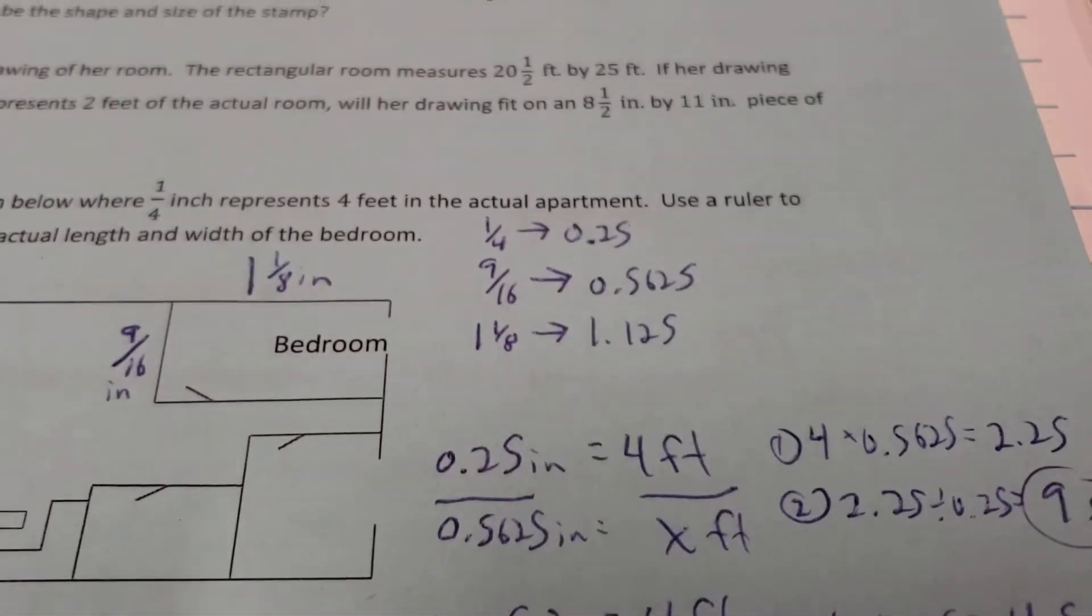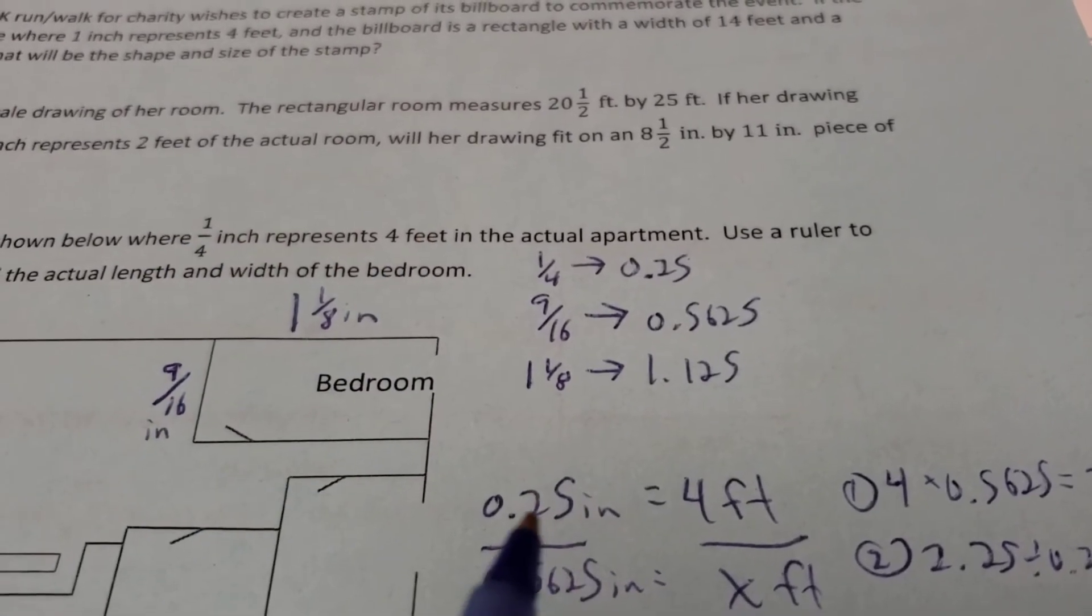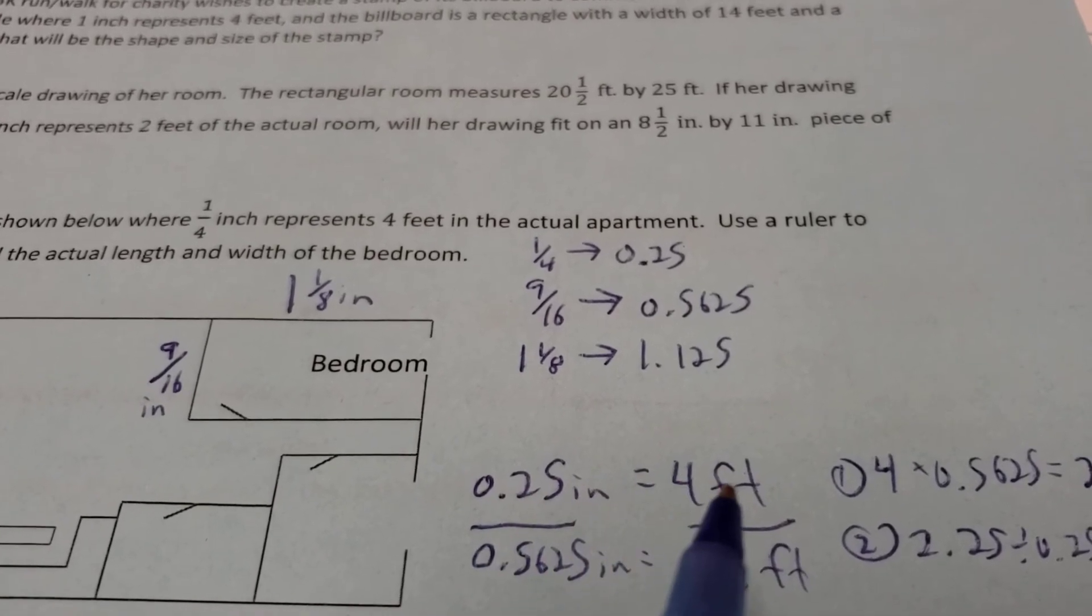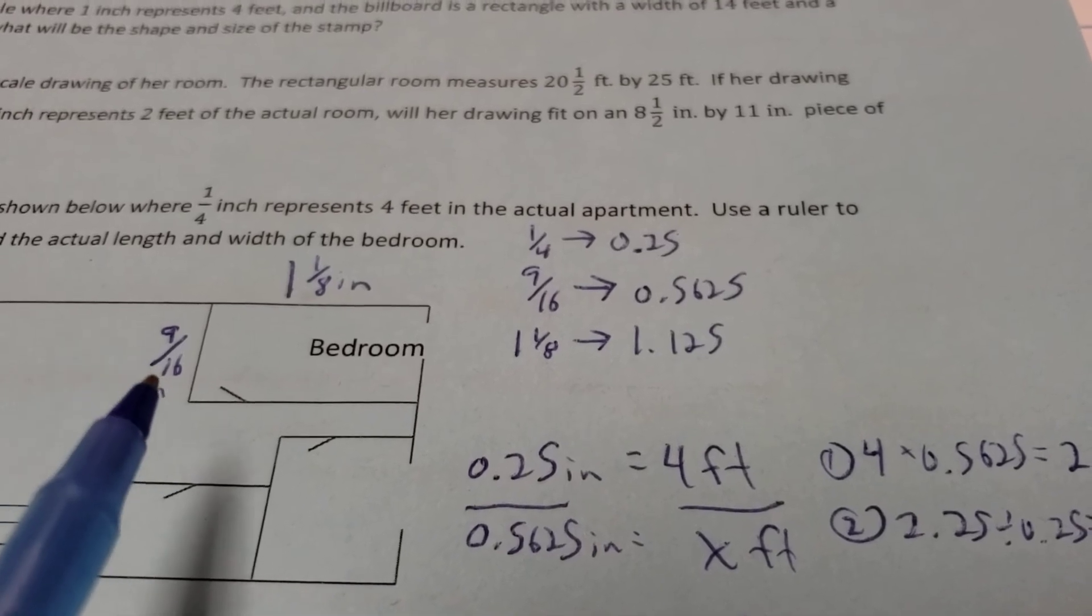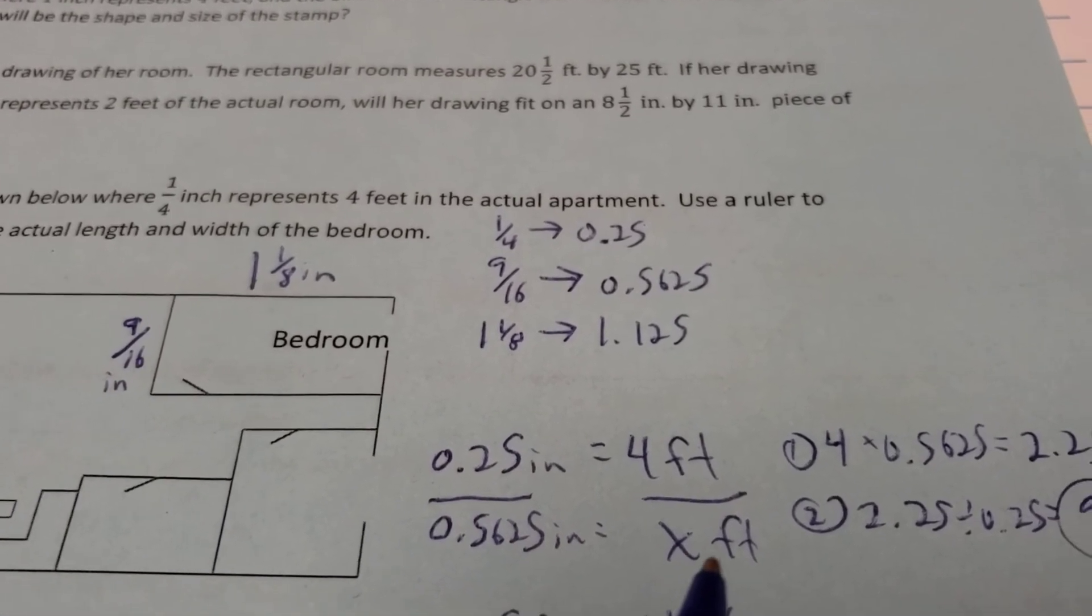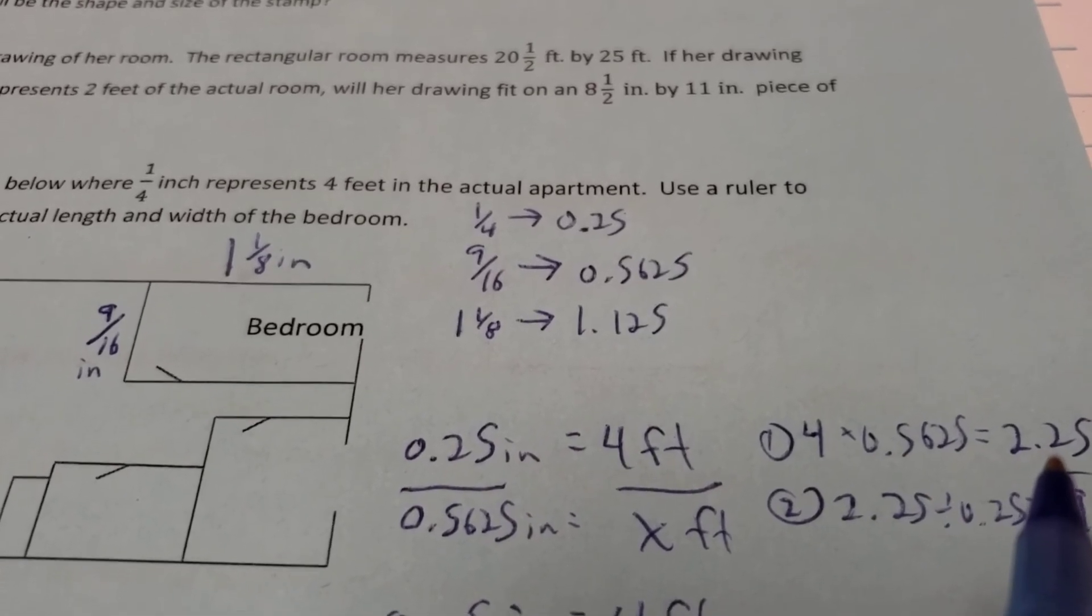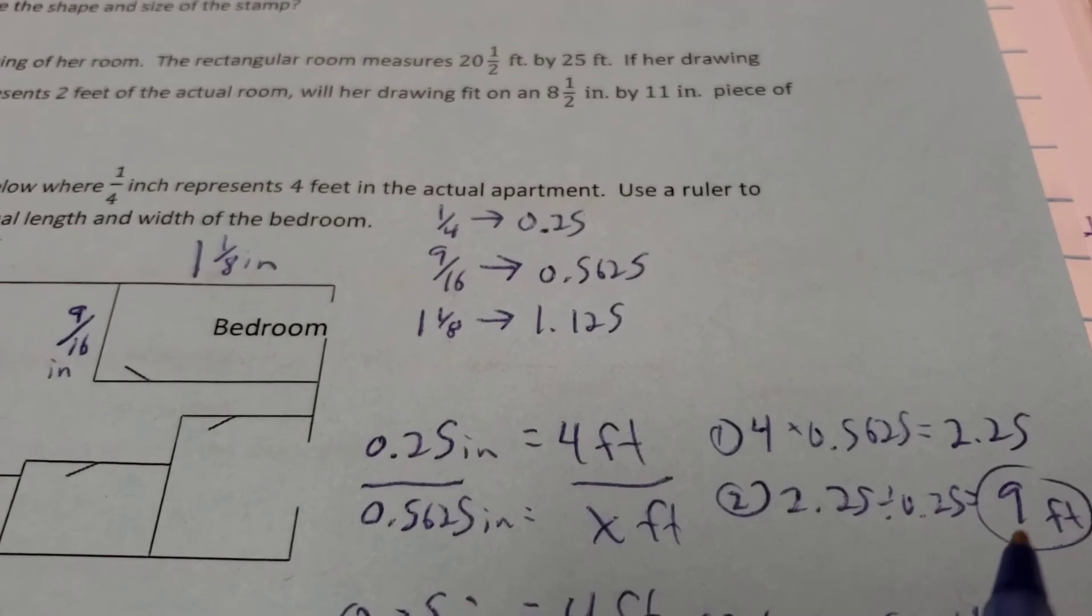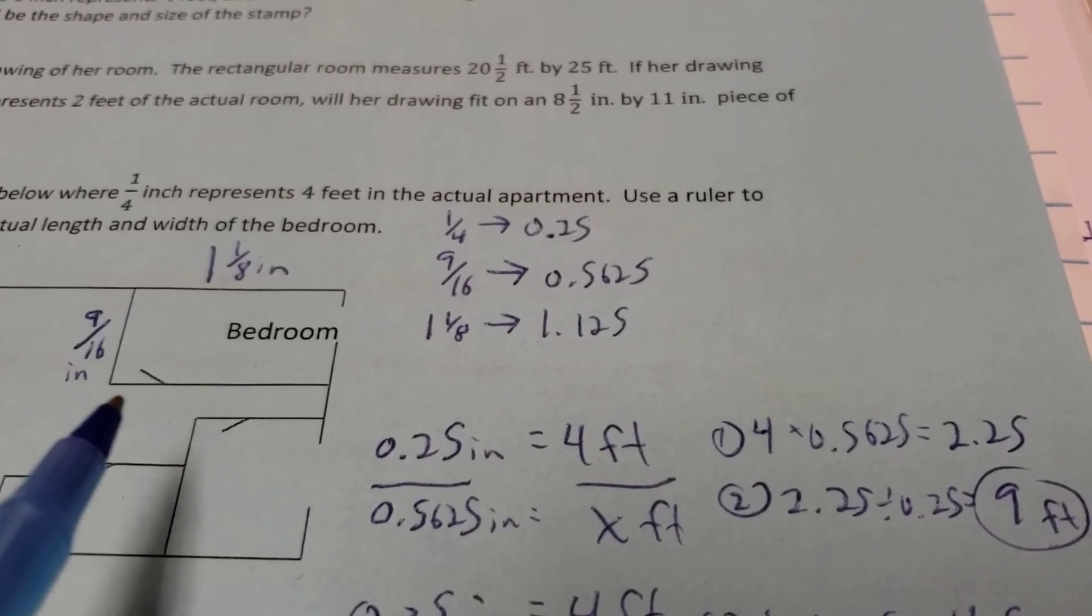So on our original scale, remember how it's supposed to be a 1/4 of an inch represents 4 feet? Well, we said 1/4, we're going to use 0.25. So 0.25 inches is supposed to represent 4 feet. So then in that case, my 9/16ths here, the 0.5625 inches is going to be how many feet? Cross multiply 4 and 0.5625, and I get 2.25. You take the answer and divide it by 0.25, and that ends up being 9 feet. So this measurement here, the 9/16ths, becomes 9 feet.